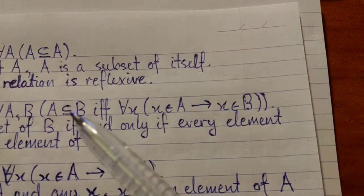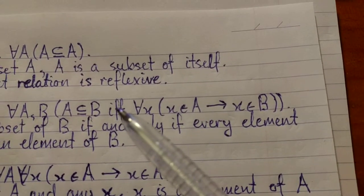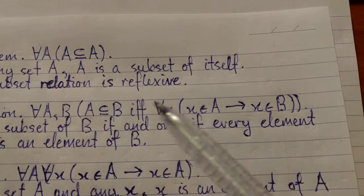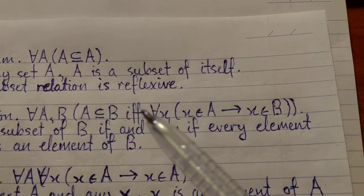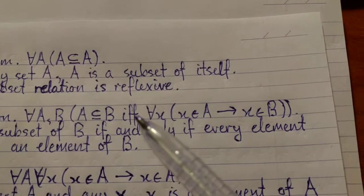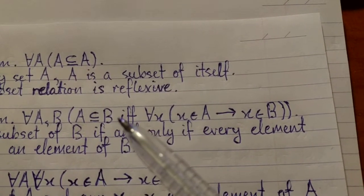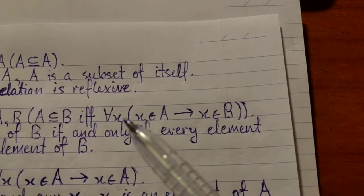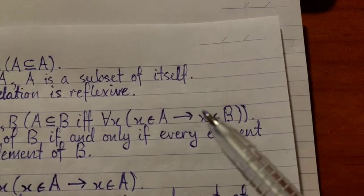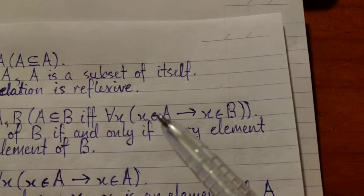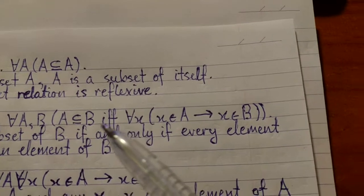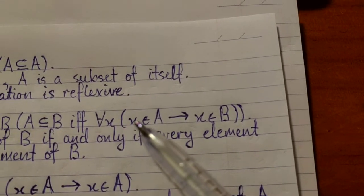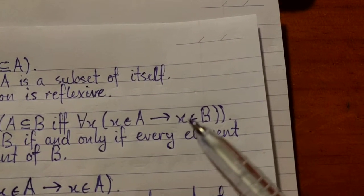Instead, what we should be concerned with is this if and only if. So, if and only if means that the implication goes both ways. It goes from the left to the right, and the right to the left. So, this is a definition. It states that this symbol here, the subset symbol, is to be interpreted in terms of the more primitive symbol, epsilon, or set membership. So, A is a subset of B, if and only if, for any x, for all x, x is an element of A, implies x is an element of B.